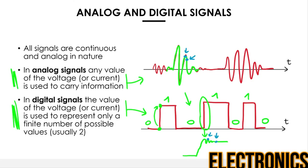How do we determine what is a logic one and what is a logic zero? The designer of the circuit defines two thresholds: VIH and VIL. Every voltage higher than VIH is a logic one; every voltage lower than VIL is a logic zero. Voltages in between carry an undetermined logic state, which is undesirable. That is one reason why digital signals move as quickly as possible between logic zero and logic one — there's no reason to stay in between the thresholds, as it carries no information.